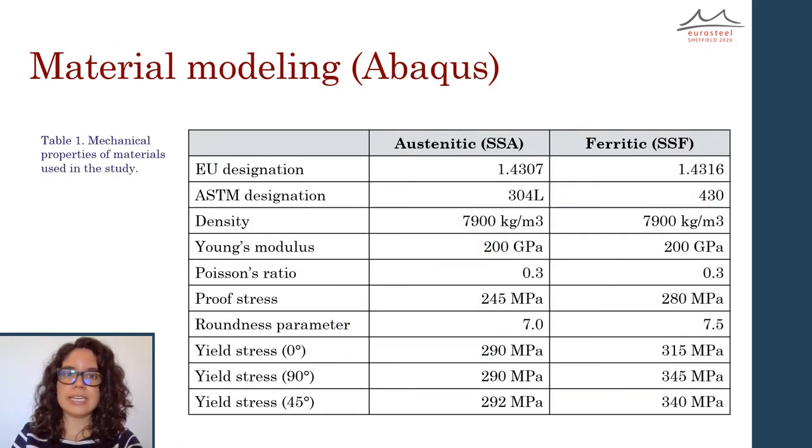To validate the finite element simulations, notch coupons of austenitic 1.4307 and ferritic 1.4316 stainless steel were used. This table summarizes their mechanical properties.